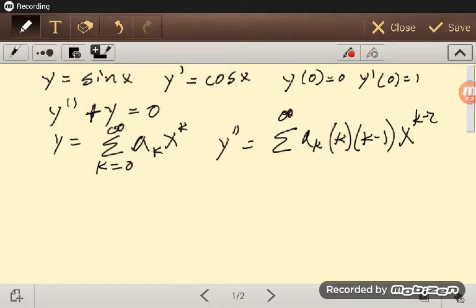We'll try another example here, actually even a simpler one. I'm going to do y equals sine of x, and then y prime is cosine of x, y of 0 is 0, y prime of 0 is 1.